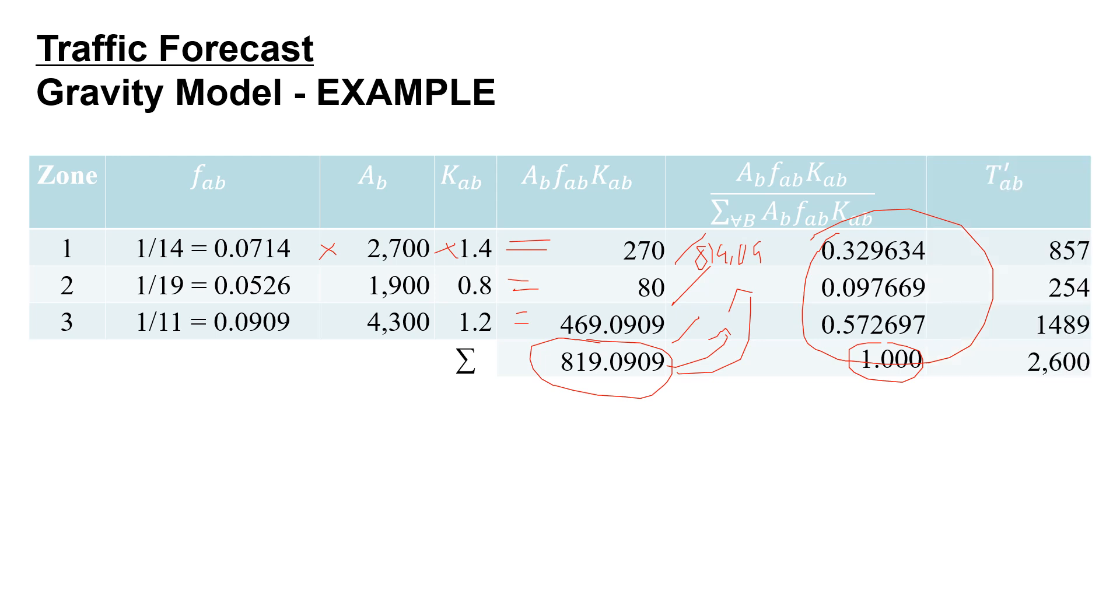And so when we're looking for the actual number of trips, this is what the question was asking us. We're going to have 857 trips from zone 1 to the development, 254 trips from zone 2 to the development, and 1,489 trips from zone 3 to the development.